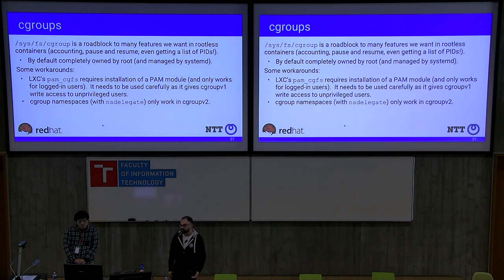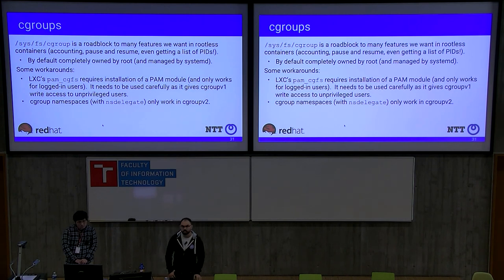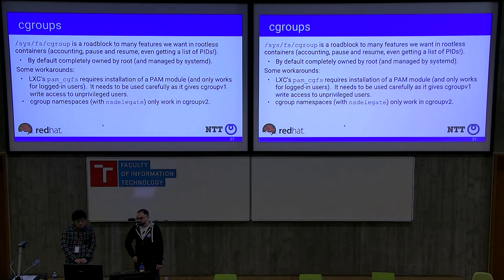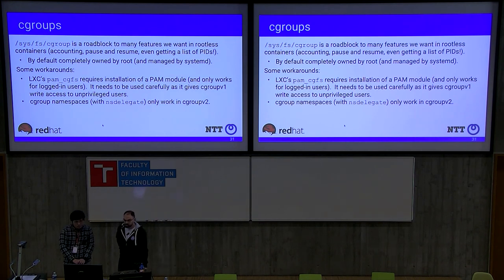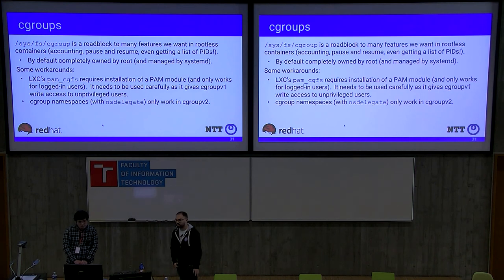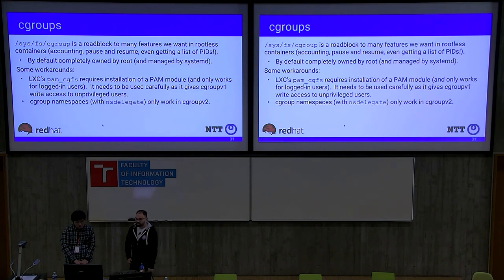Cgroups are the biggest problem with rootless containers at this point. Cgroup v1 is not safe to be used by a rootless user — by default it is completely owned by root and managed by systemd, and workarounds introduced their own issues such as using setuid programs as LXC does. Cgroup v2 will solve these issues, but it still cannot be fully used because it is missing some features needed for running containers. Once it is feature-complete it will allow any rootless container to manage its own cgroups subtree.